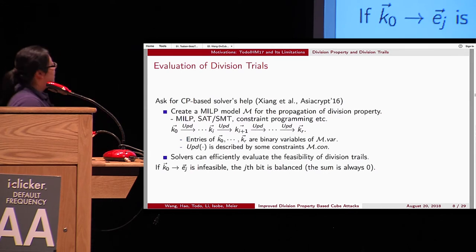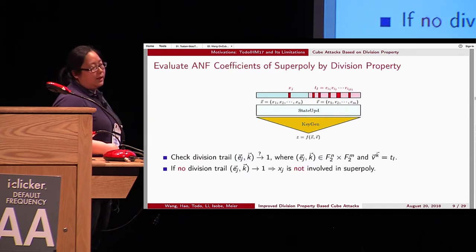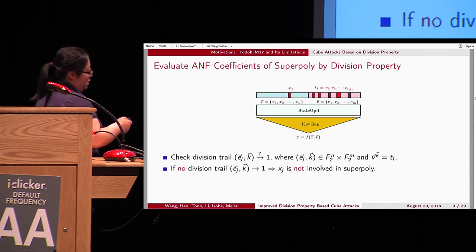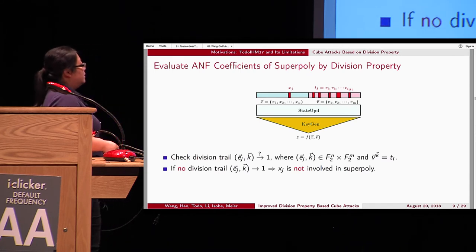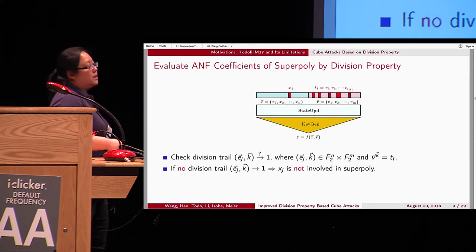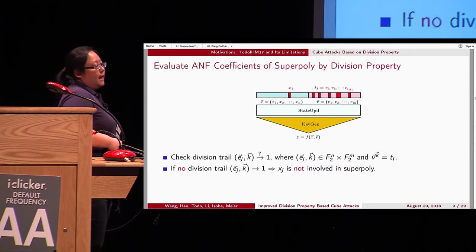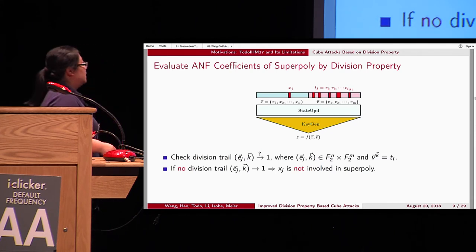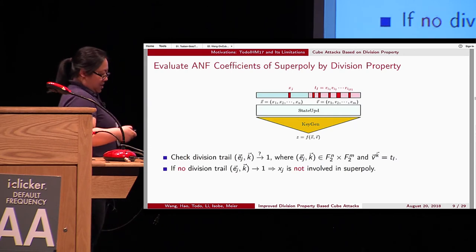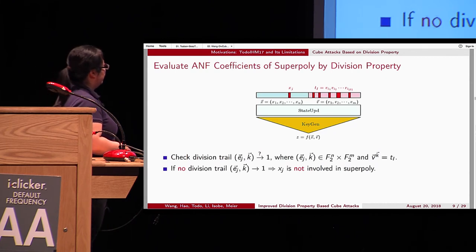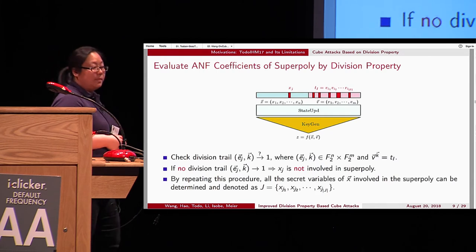How can this help us evaluate the superpoly of stream ciphers? We already take some cubes, and now we want to check if a secret variable is involved in the final superpoly. We put this as an initial trail and check if the division property is feasible. Here, the cube variables are active and if no division trail exists, then x_g is not involved in the superpoly. Doing this one by one, we can determine all secret variables involved and denote this set as G.